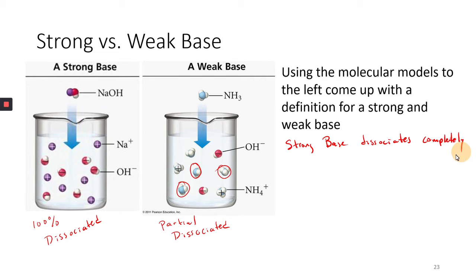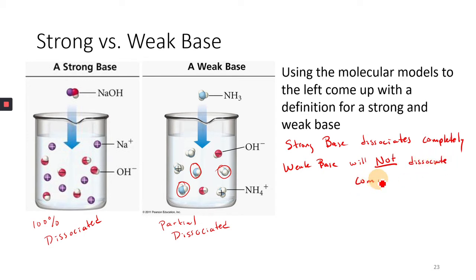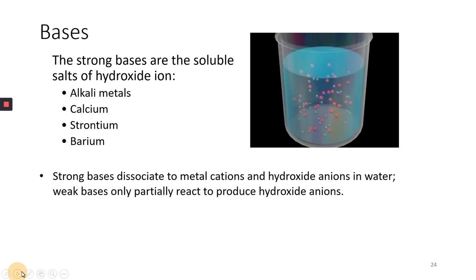Why not use the word 'ionizes'? Because if you have an ionic compound and it separates into ions, it's called dissociation. If you have a covalent compound and it forms ions, it's called ionization. So a weak base will not dissociate completely. The official definitions: a strong base dissociates to a metal cation and hydroxide ions in water; a weak base will only partially produce hydroxide ions.